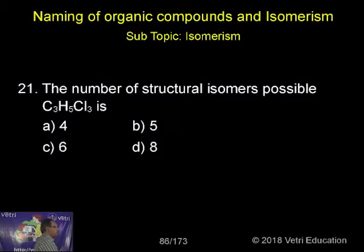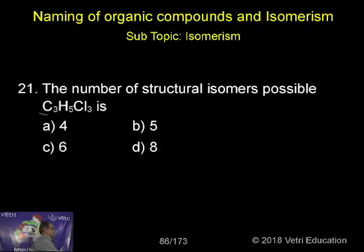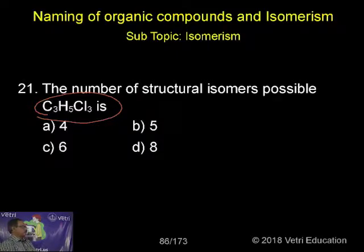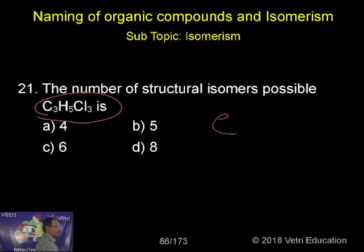The question asks for the number of structural isomers possible for C₃H₅Cl₃. The options are A) 4, B) 5, C) 6, D) 8. There are nearly four isomers possible, since we have a three-carbon chain.